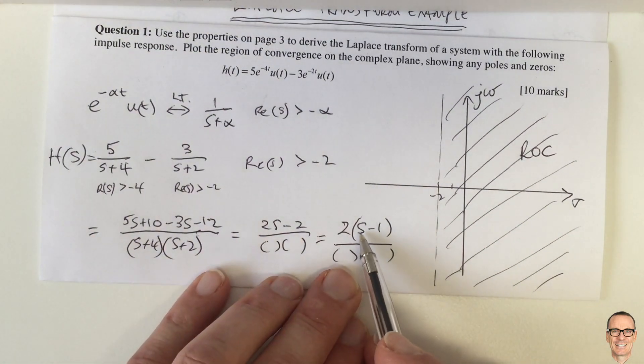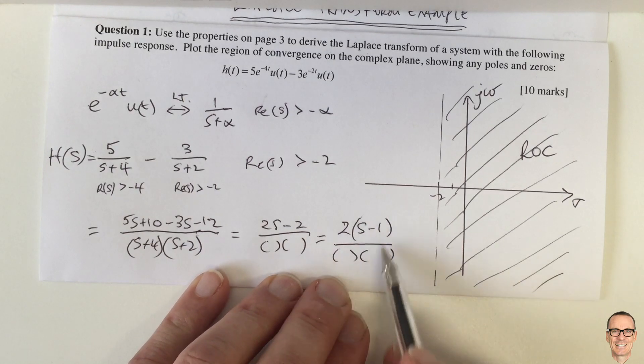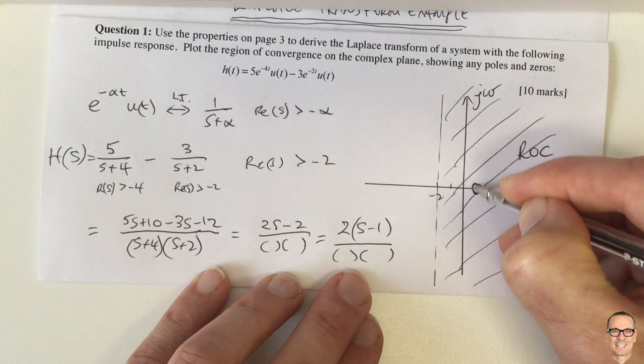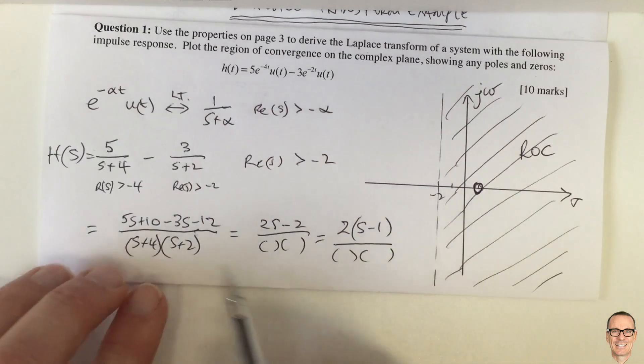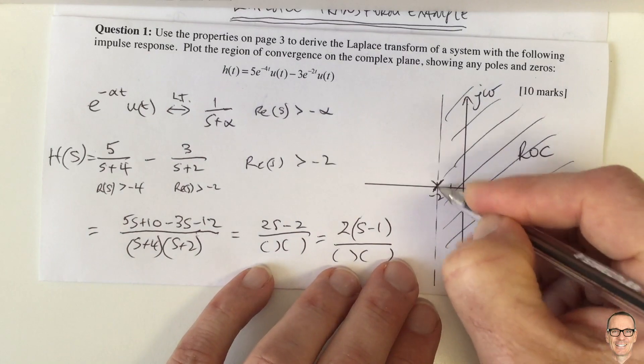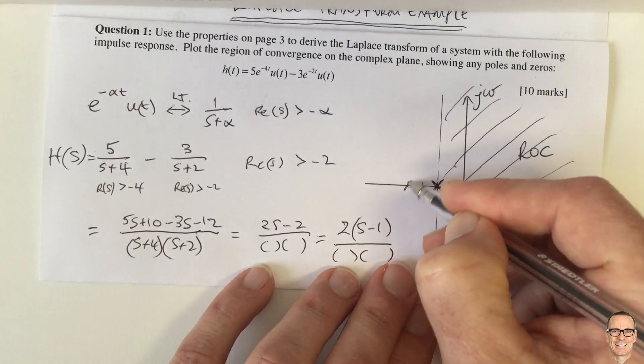So we have a zero at s equals 1, because if s equals 1, this term would equal 0. So we have a zero here, and we have a pole at s equals minus 2 and s equals minus 4. So we indicate those with a cross.